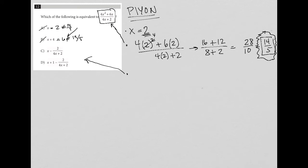Let's try c. Okay, so c would be 2 minus 2 over, we know that 4x plus 2 from the question, 4x plus 2 ends up being 10.